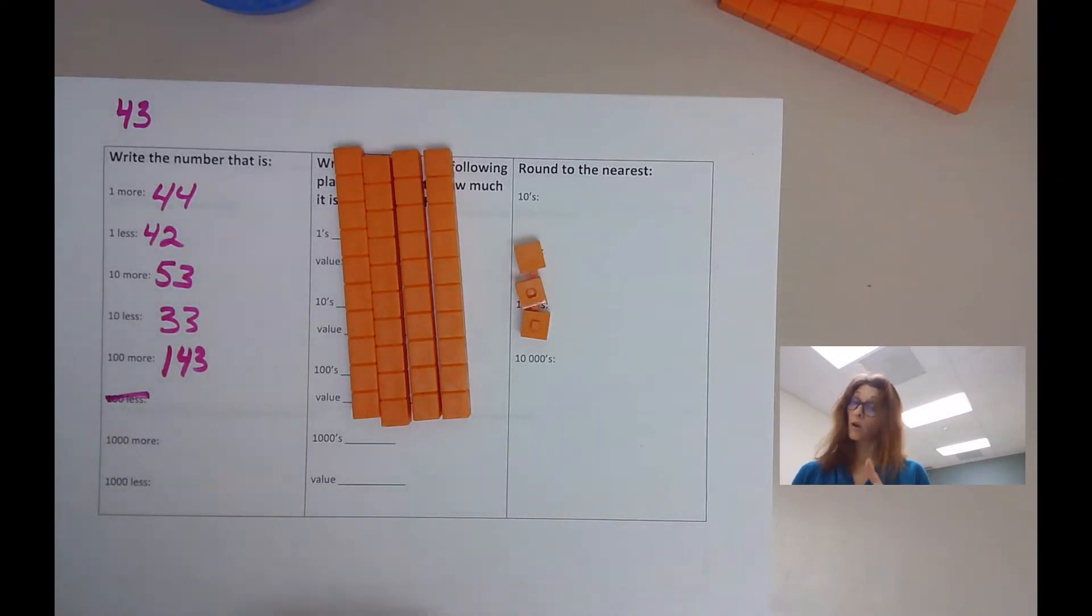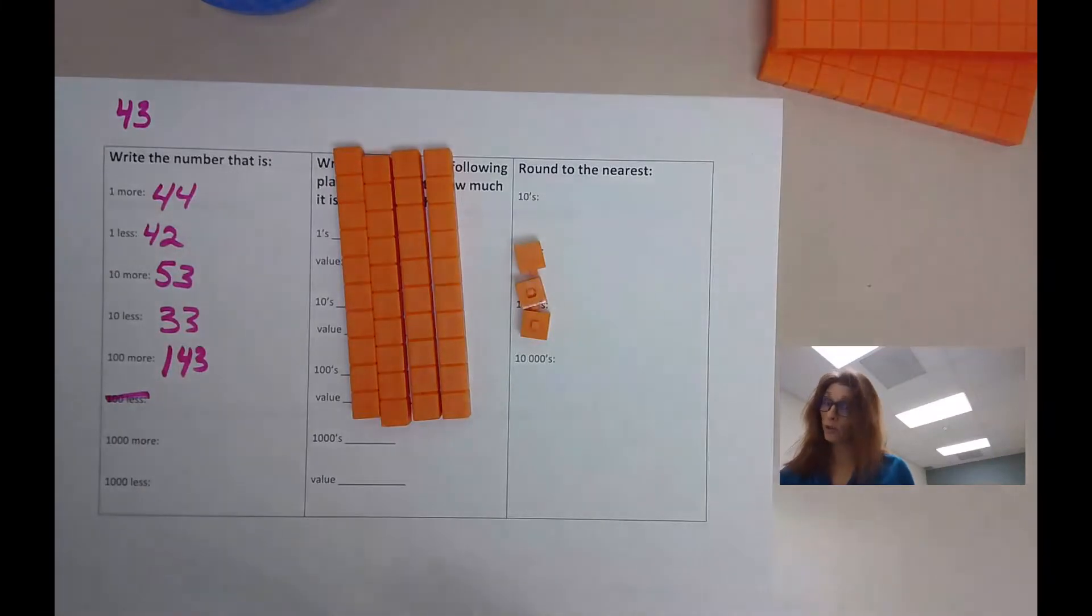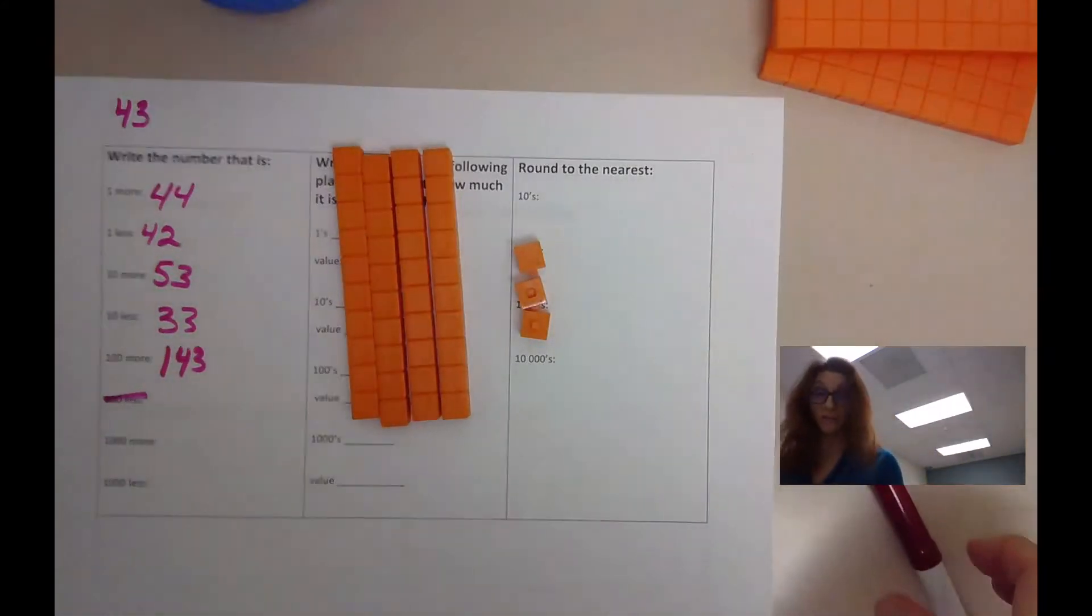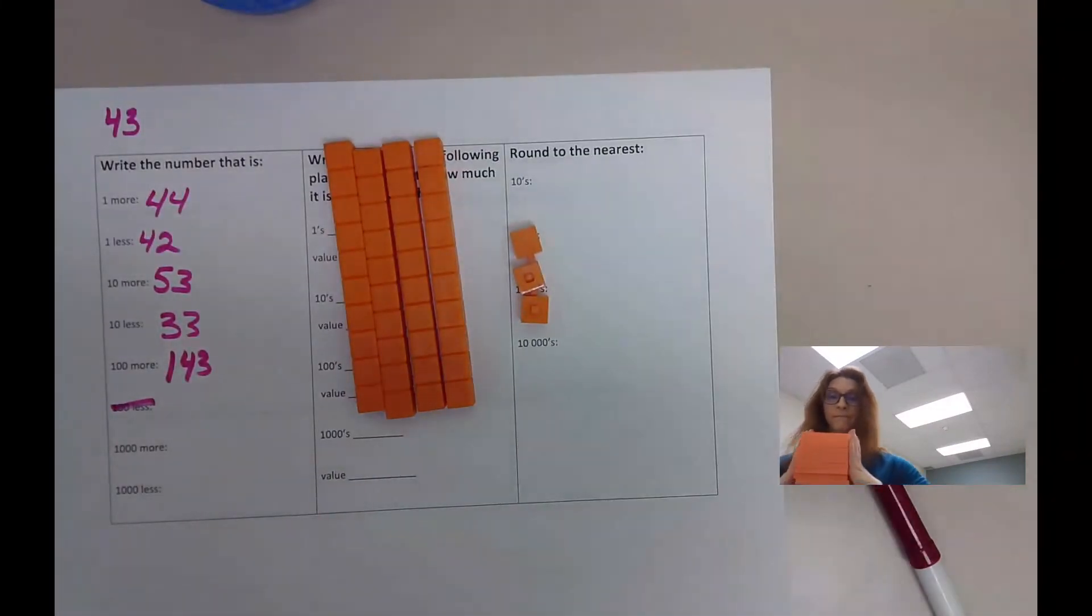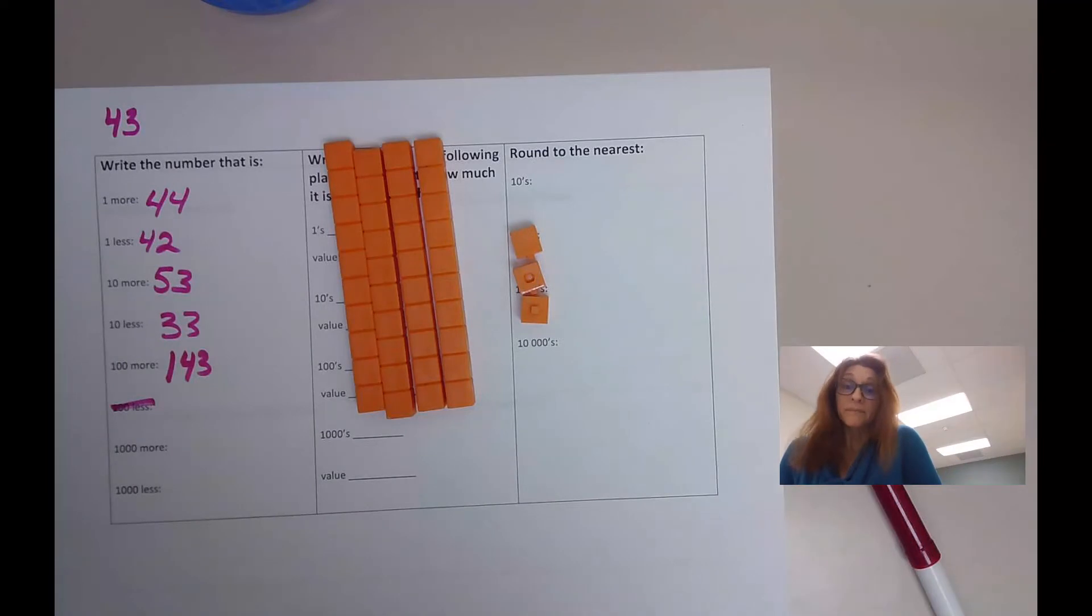1,000 more. We can do that. You can add to any number, you just make your number larger. So if I had 1,000 more, if I had a cube. Hold on, I need a cube. I do not have a cube on me, which is 1,000, but I do have 10 hundreds. That makes 1,000.